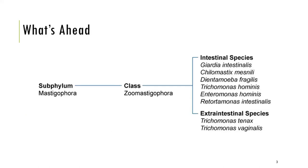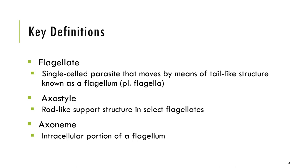Let us review the classifications of our flagellates. This is still under protozoans, under subphylum Mastigophora, class Zoomastigophora. We can classify flagellates into two: intestinal species and extraintestinal species. This classification is based on the habitat of the flagellates in the body. Flagellates are protozoans equipped with flagella, which is their structure for locomotion.